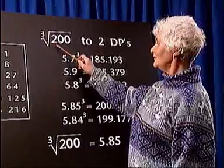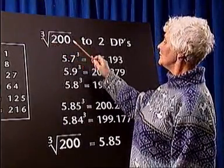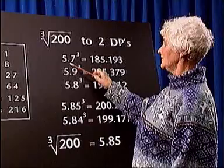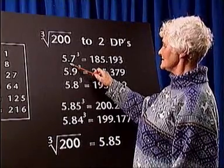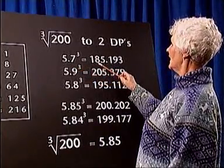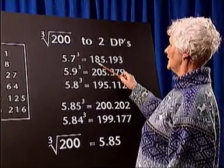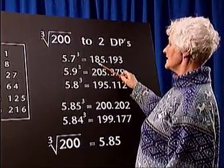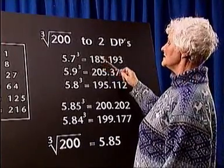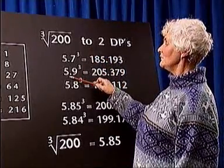For our first trial of the cube root of 200, we will use 5.7 cubed. 5.7 cubed is equal to 185.193. This is below 200, so perhaps we can improve on this estimate.